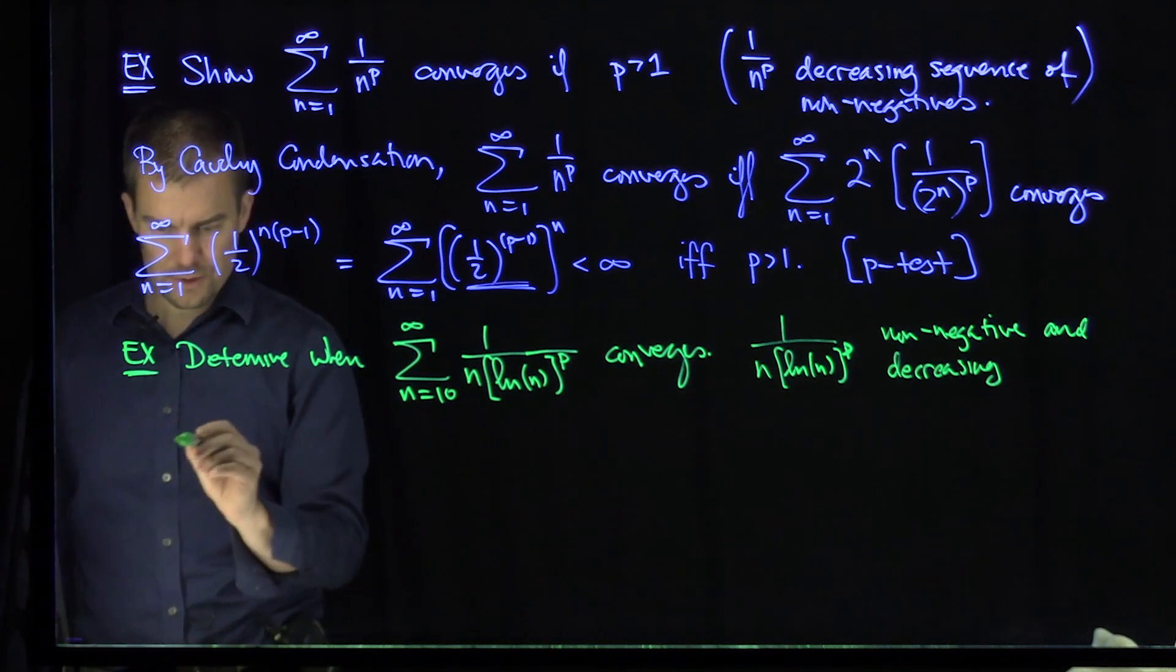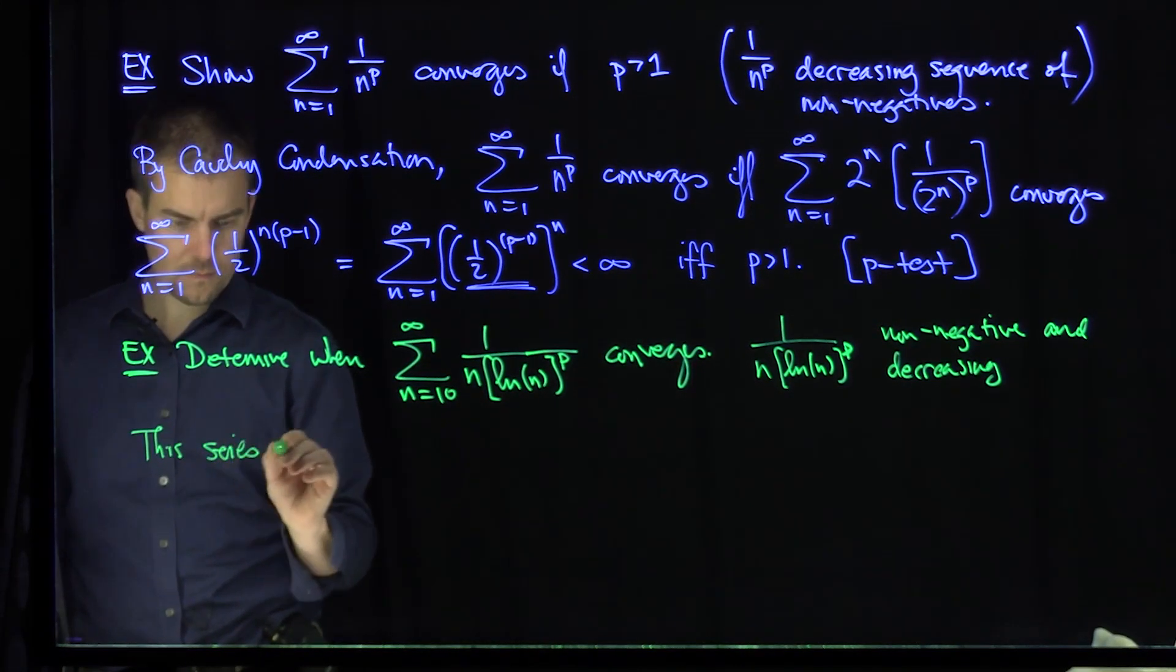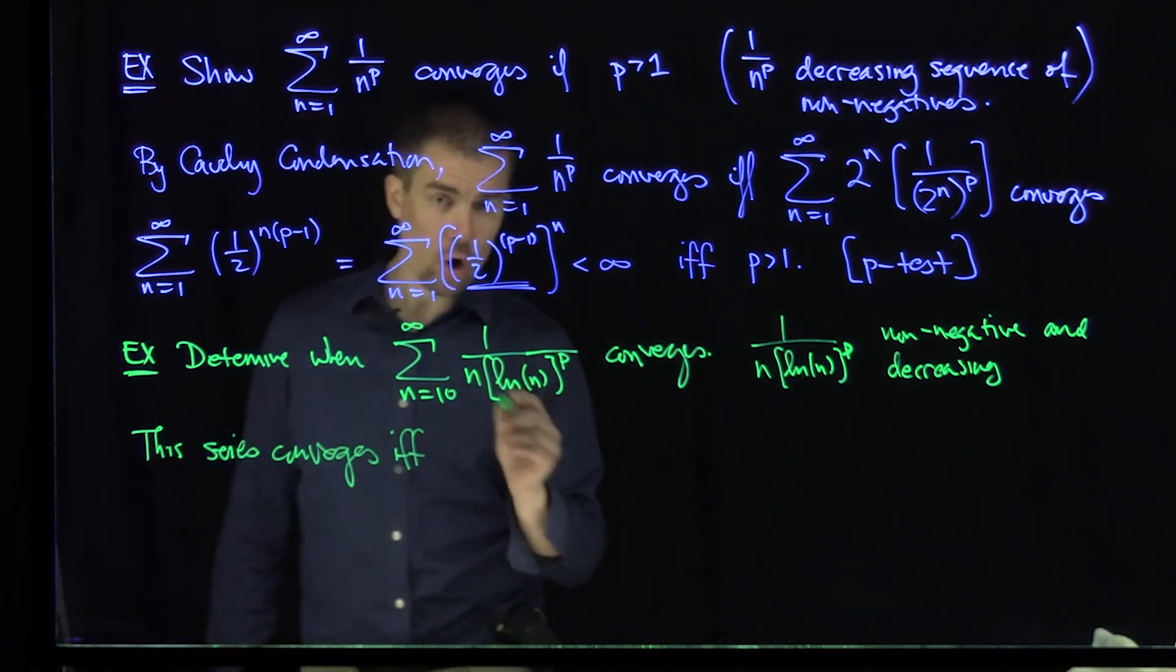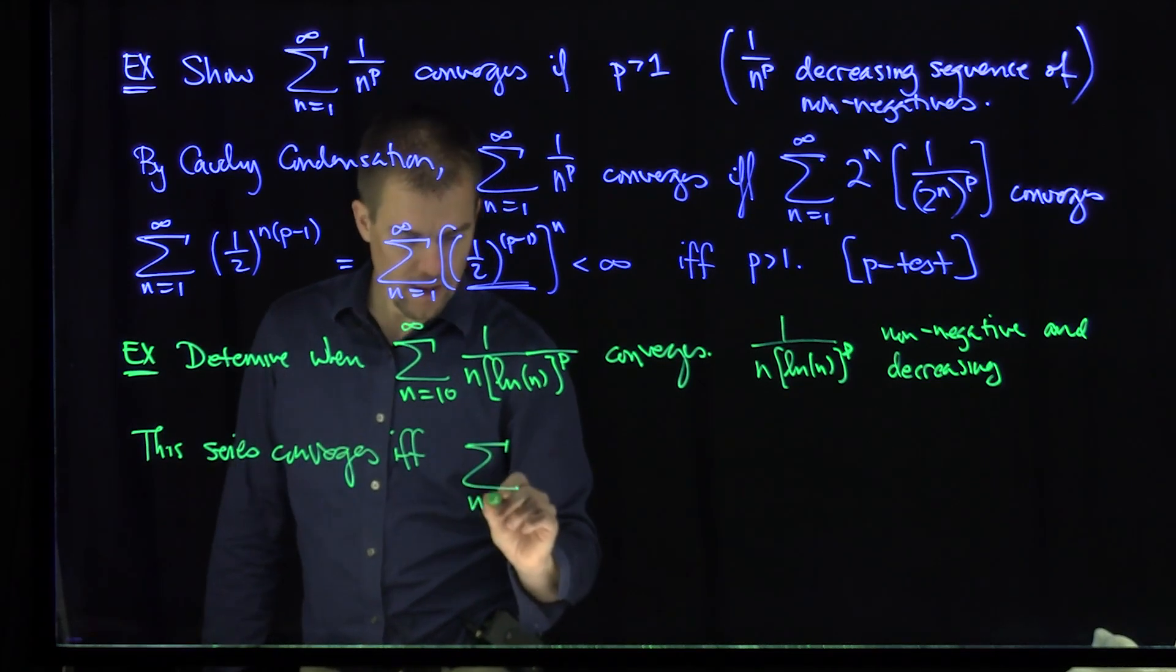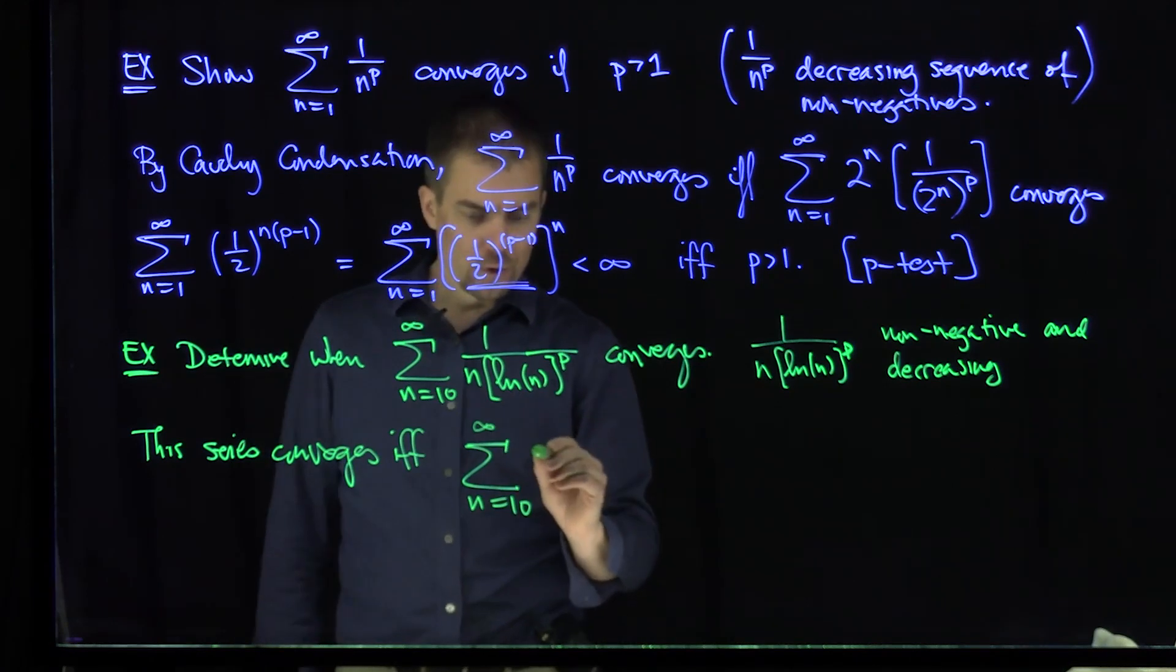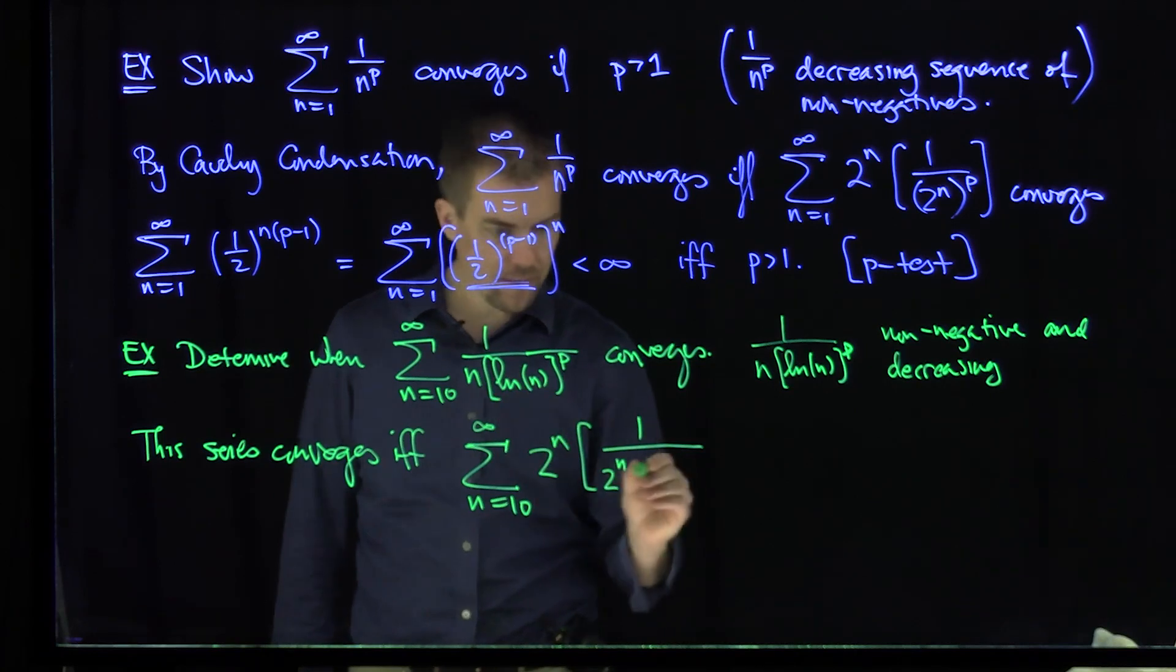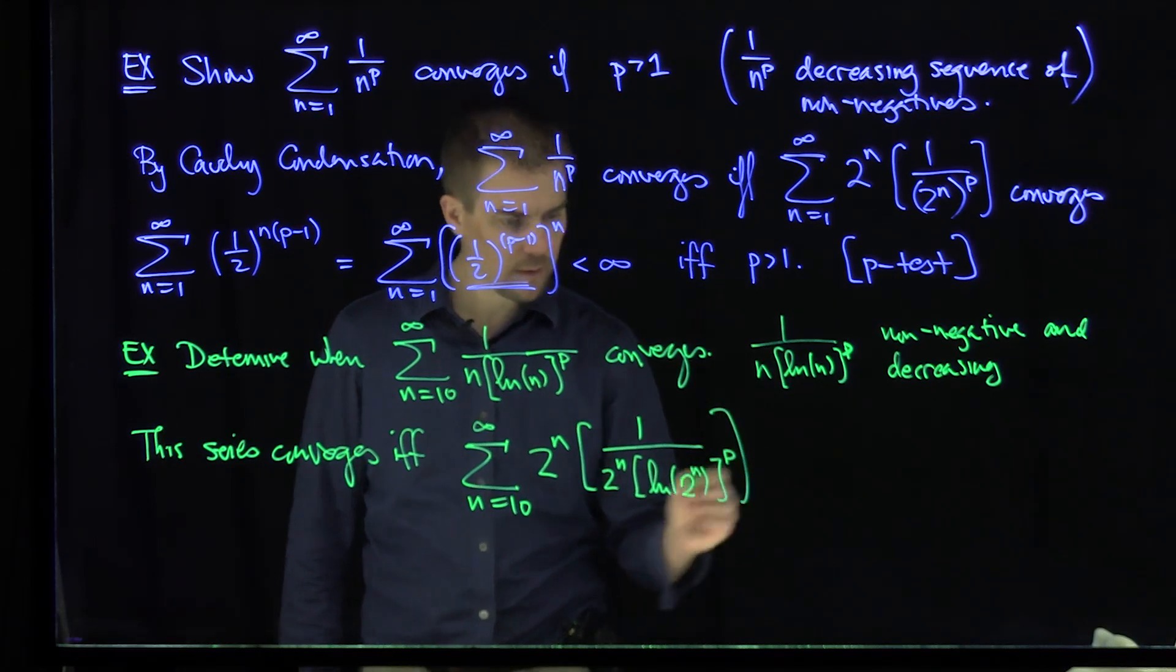So our series converges if and only if, I'm going to replace all the n's with 2 to the power n. The sum n goes from, we can say 10, it doesn't matter. Again, the starting point's irrelevant. 2 to the power n. And then I'm going to do a 1 over 2 to the power n for that n, and I'm going to have a log of 2 to the power n raised to the p power.